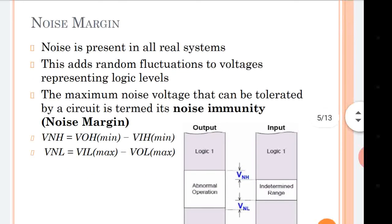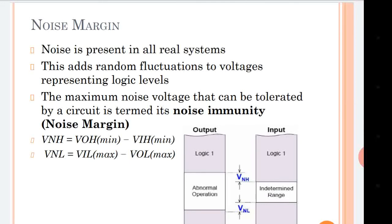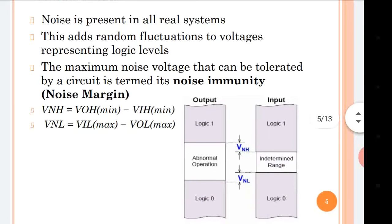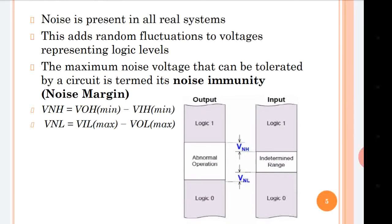Next is the noise margin. Noise is an unwanted electrical signal and is present in all real systems. The tolerance or noise immunity is the ability of the circuit or device to tolerate that noise — that is called as noise margin or noise immunity. It is the difference between the high level and low level voltage values of the input and the output.